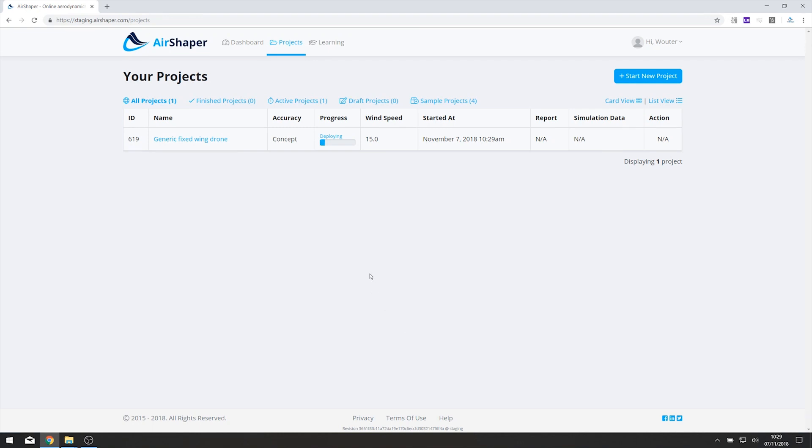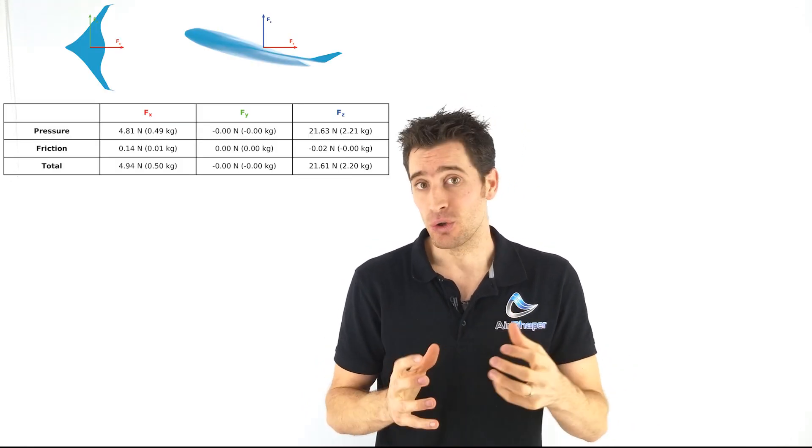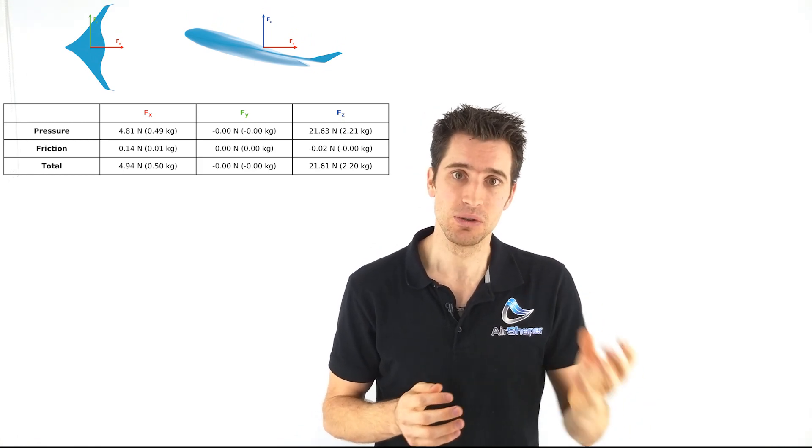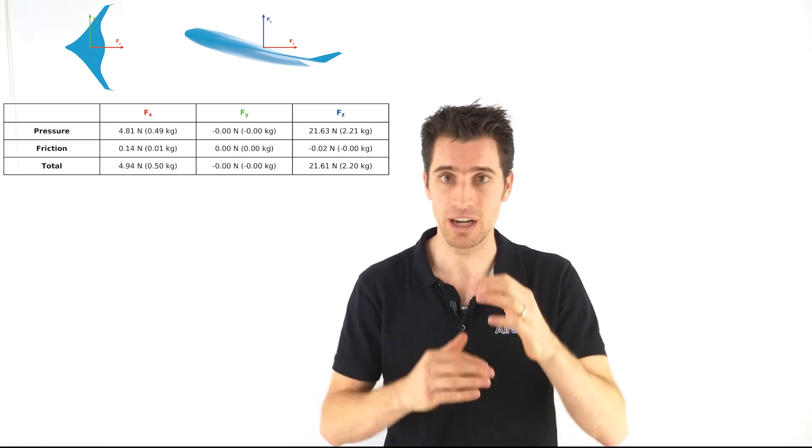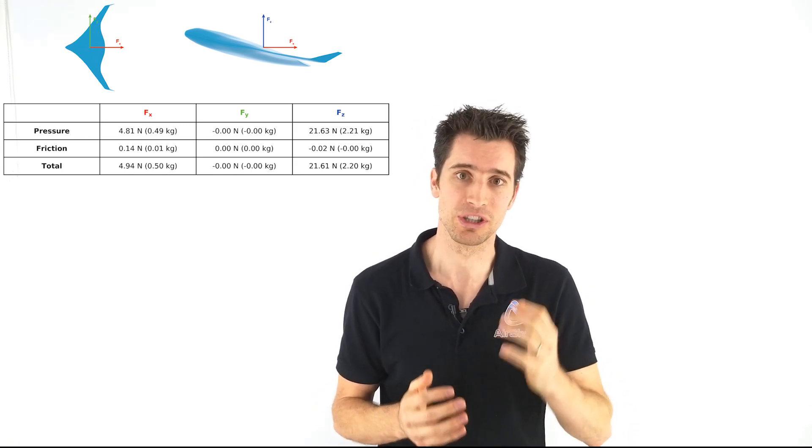It will now be put in the cloud, and about 4 hours later we'll be looking at the results. Okay, we have the results now. Let's first relate them to the drag and lift theory that we saw in the previous video. This drone has a lift value of around 21N and a drag value of around 5N, giving it a lift over drag ratio of around 4.37.